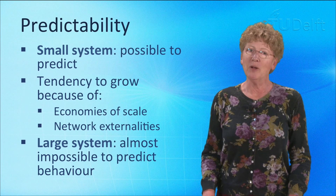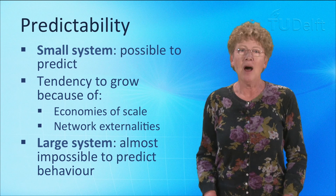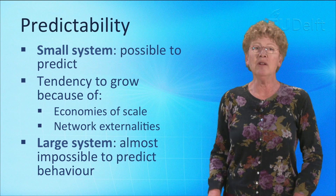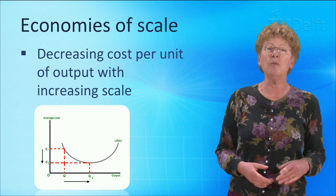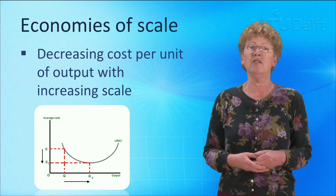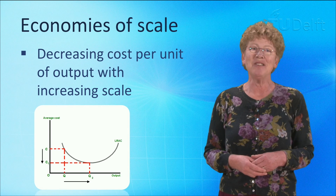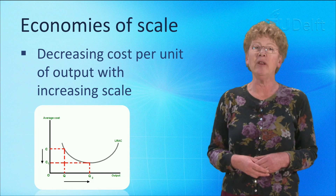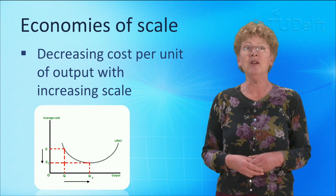I am sorry to disappoint you. For a small system at a very local level, it may be possible to model the system accurately and to predict its behavior. However, most infrastructure systems are much larger and have a tendency to grow continuously as a result of economies of scale and network externalities. Many technologies applied in infrastructure systems are characterized by decreasing cost per unit of output with increasing scale until a certain optimum size of operation — that is why electricity infrastructures are still dominated by large-scale thermal power plants. The growth of infrastructure networks is largely explained by the economic driver to exploit economies of scale, thus making the service more and more affordable for increasing numbers of users.